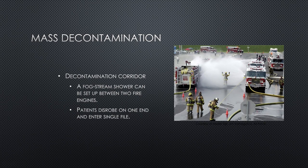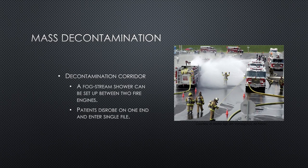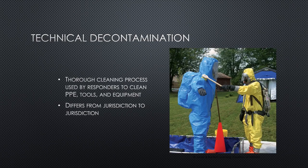You're going to have a decontamination corridor. Firefighters can set up hose streams to perform mass decontamination. The corridor can be set up in a warm zone by parking two fire engines parallel to each other, approximately 10 to 20 feet apart. Nozzles attached to the side discharge ports can create a fine particle fog stream, providing a decontamination shower, so people can be taken through that corridor before being brought into the cold zone. Patients disrobe on one end and enter in single file. Remember to be cautious for hypothermia in certain environments.